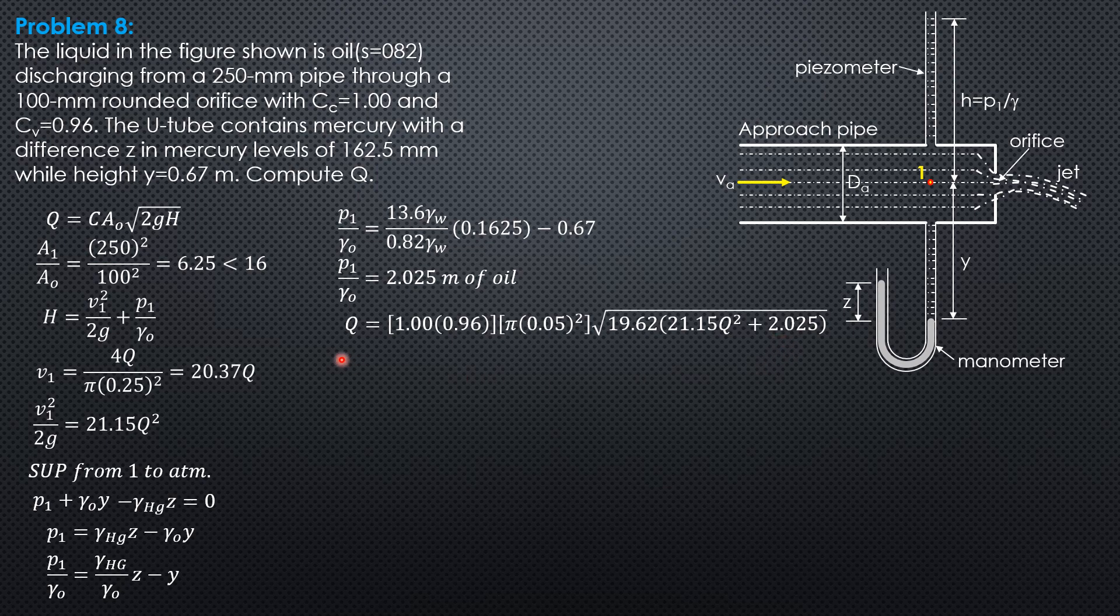Q divided by (0.96 × π × 0.05²) times square root of 19.62 will give us 29.94Q. We square this so that the right side will be 21.15Q² + 2.025. So only Q is now the unknown.